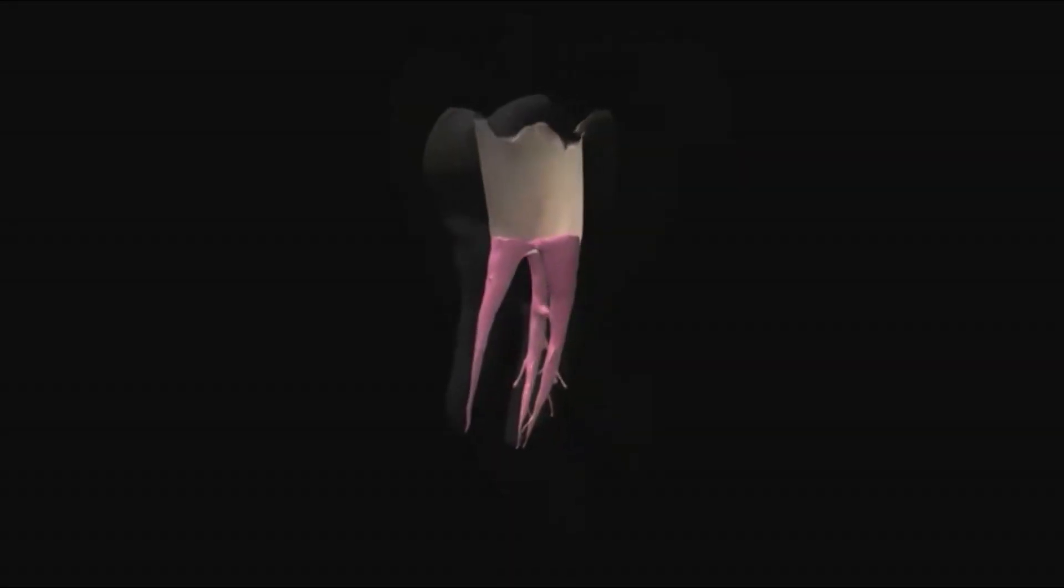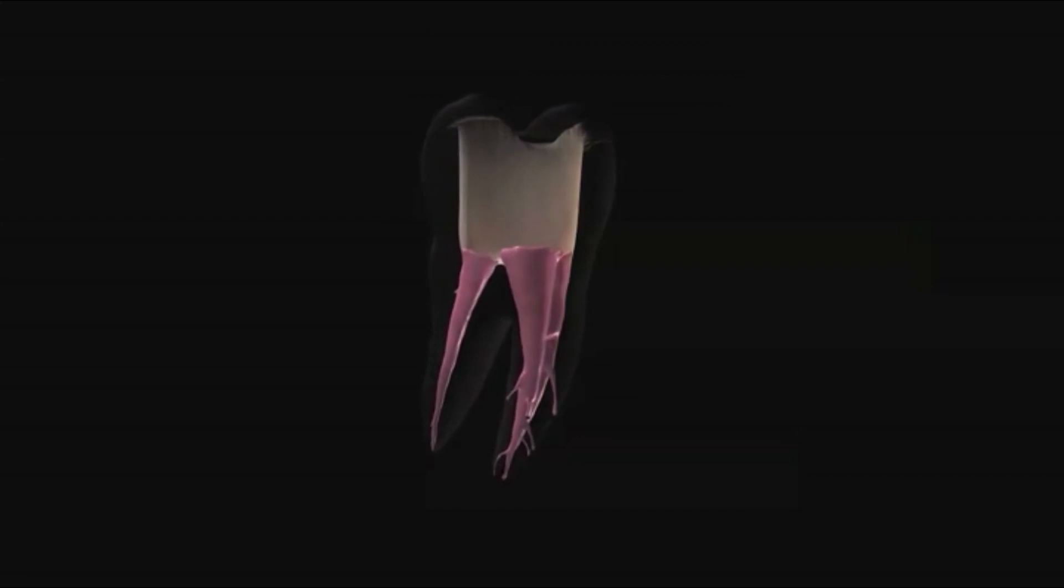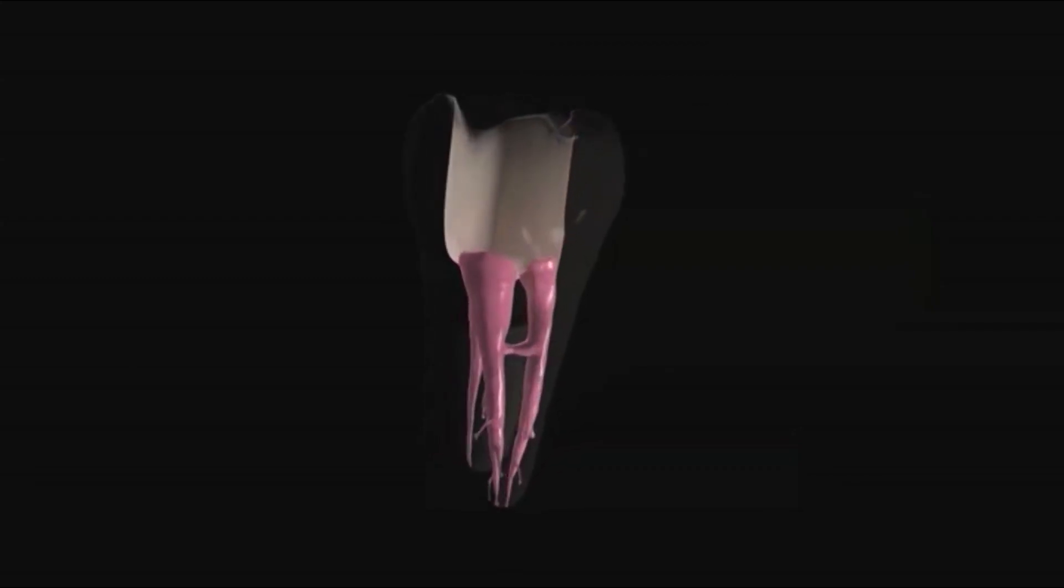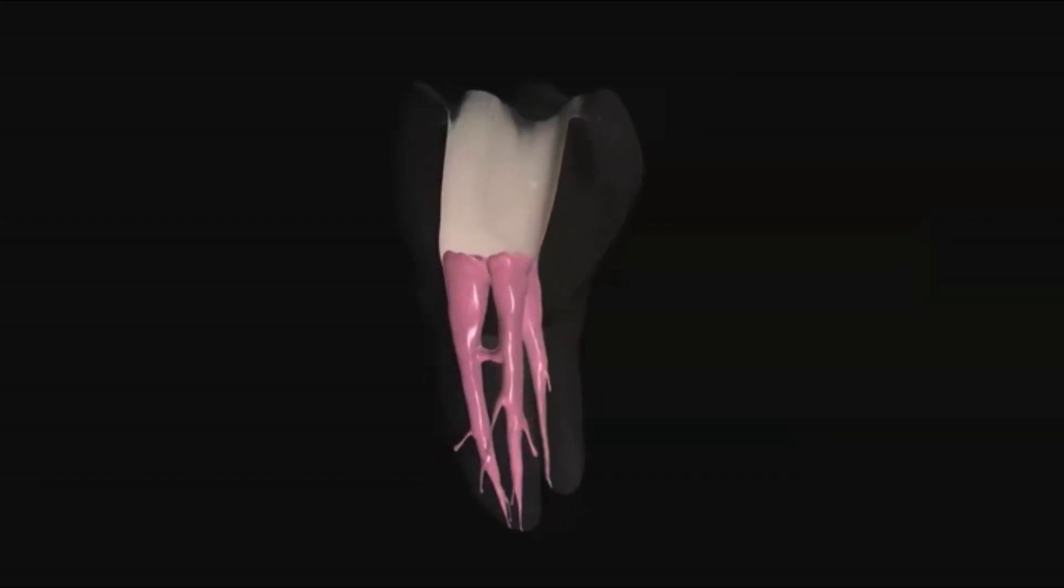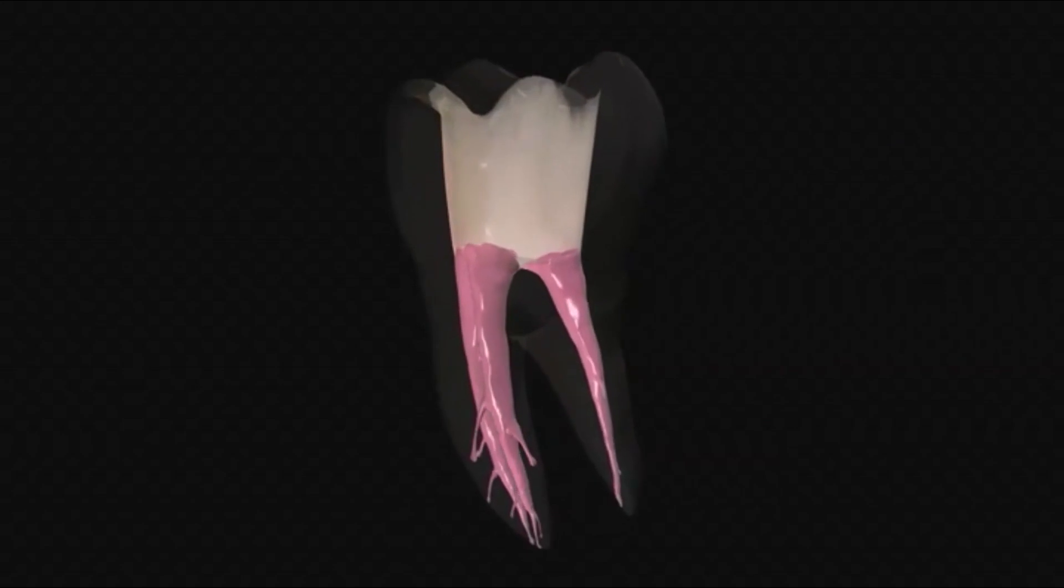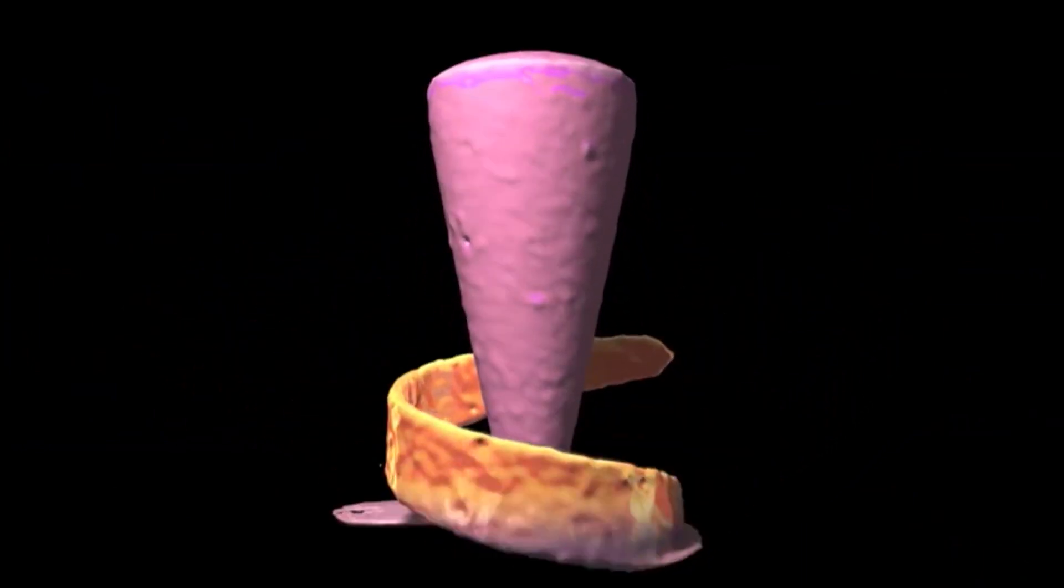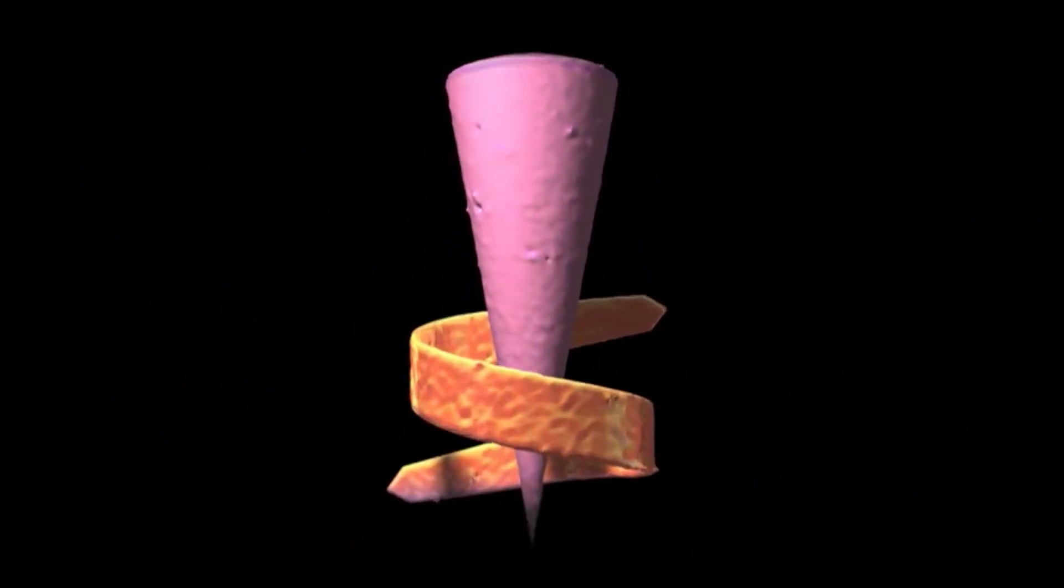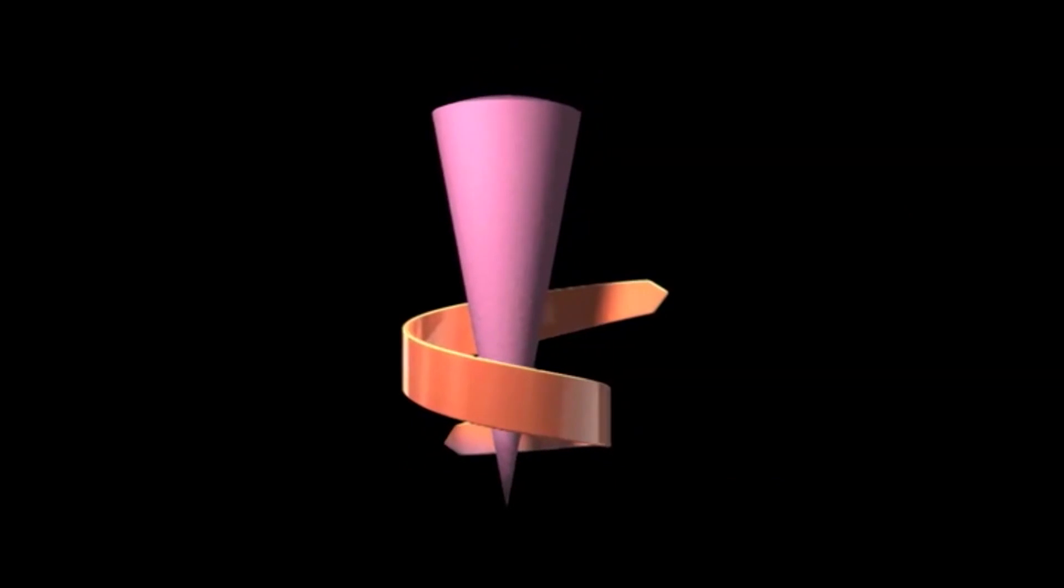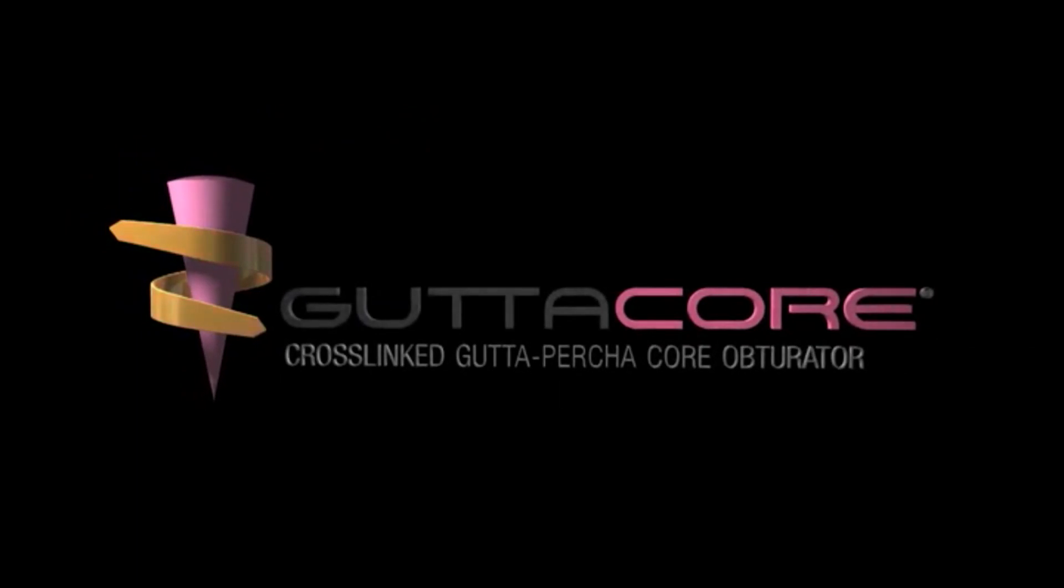GuttaCore, cross-linked Gutta-percha core obturators. Everything you know and trust about Gutta-percha, with the convenience and performance of a Dentsply Tulsa Dental Specialties obturator. Experience the GuttaCore difference, because it's what's inside that counts.